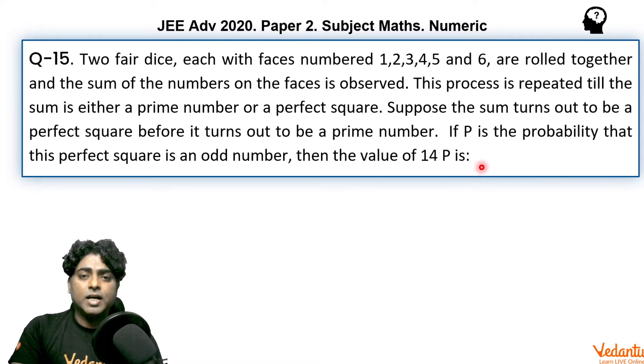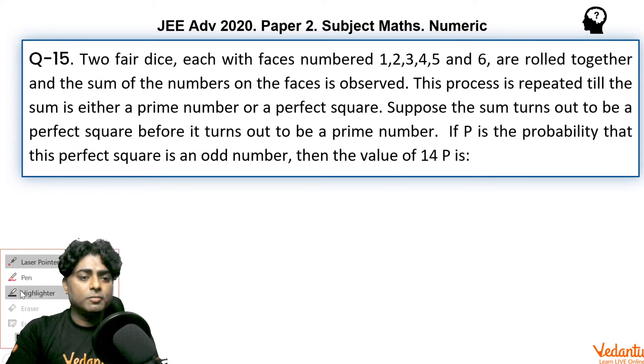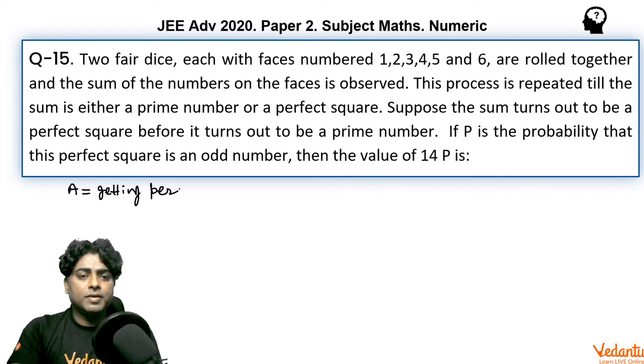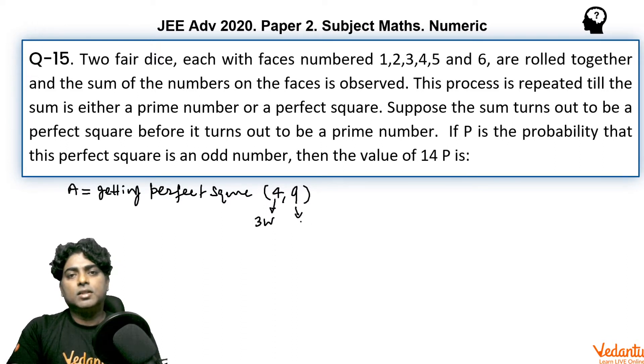Before finding the entire process let us define a few events here related to the problem. I am going to define event A that we are getting perfect square, that is 4 or 9. Now 4 can come in 3 ways: either 1 and 3, 3 and 1, 2 and 2. 9 can come in 4 ways: 3, 6, 6, 3, 4, 5, 5, 4. So what is the probability of getting perfect square? It is obviously 7 upon 36. Clear?